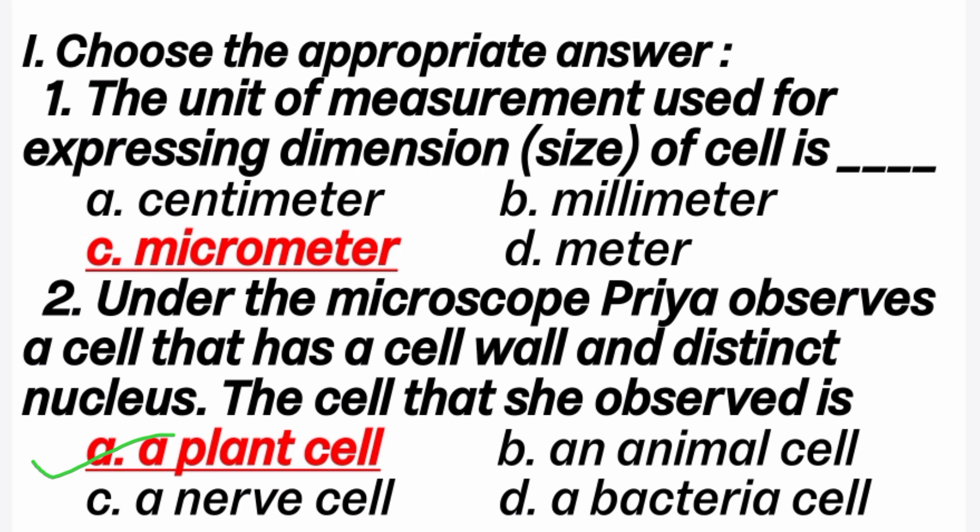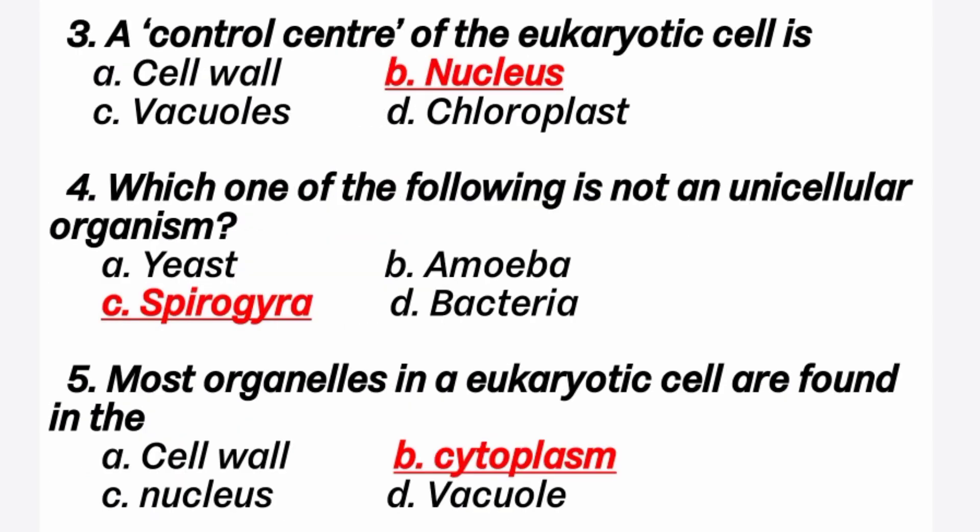Because the cell wall is only present in plant cell. Plant cell only has cell wall. Animal cell has no cell wall. Third question: a control center of the eukaryotic cell is? Answer is B option, nucleus. Eukaryotic cell means a cell that contains a well-developed nucleus.